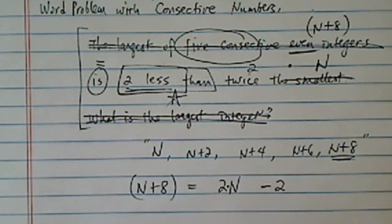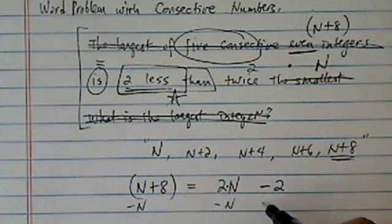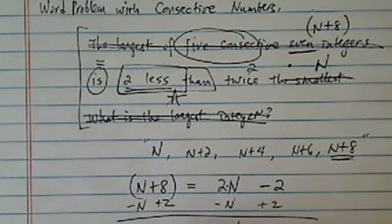Once you've got the equation over here, it's really easy to solve. Let's subtract n on both sides and then add 2 on both sides. Obviously, then n is equal to 10.